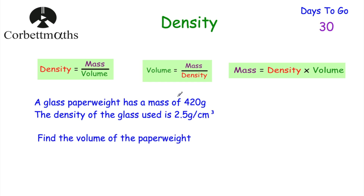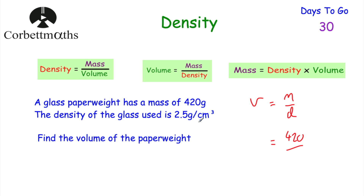Next question: a glass paperweight has a mass of 420 grams, and the density of the glass used is 2.5 grams per centimetre cubed — meaning every centimetre cubed has a mass of 2.5 grams. Find the volume of the paperweight. Using the formula: volume equals mass divided by density, that's 420 divided by 2.5, which equals 168 centimetres cubed. So the volume of the paperweight is 168 centimetres cubed.